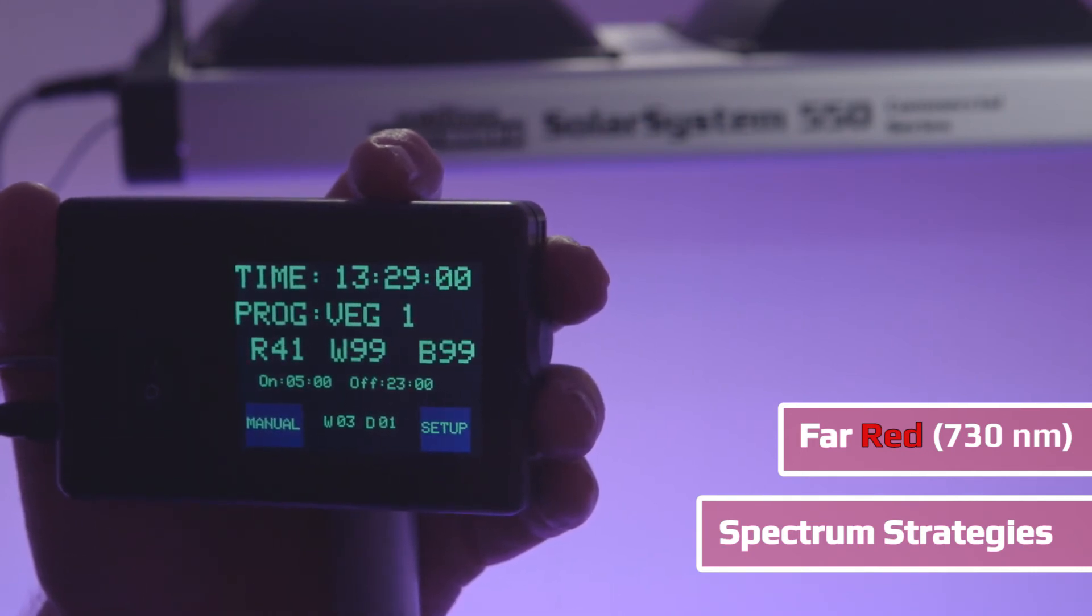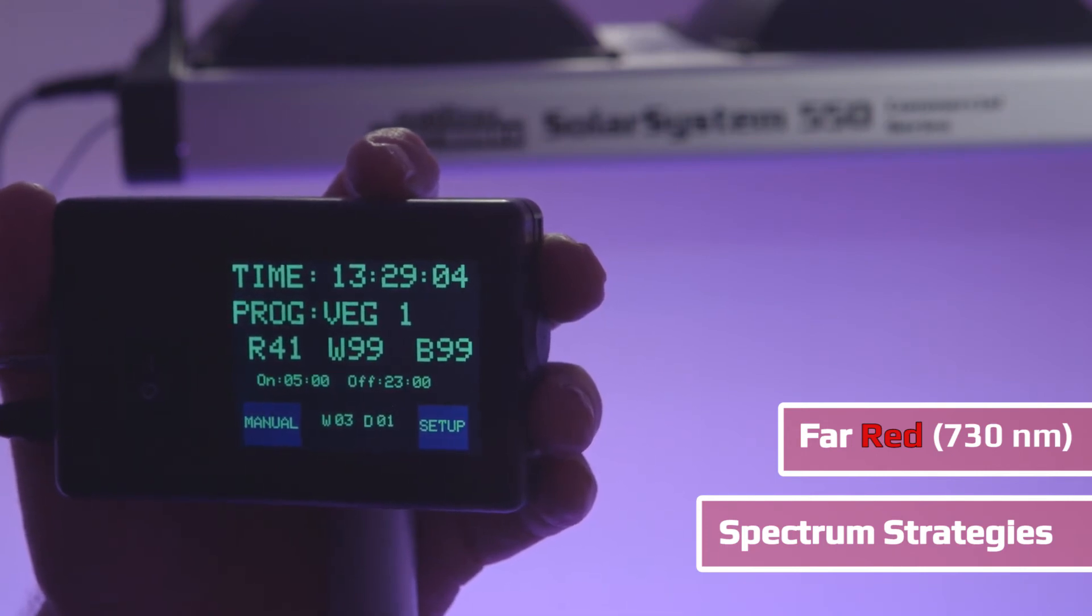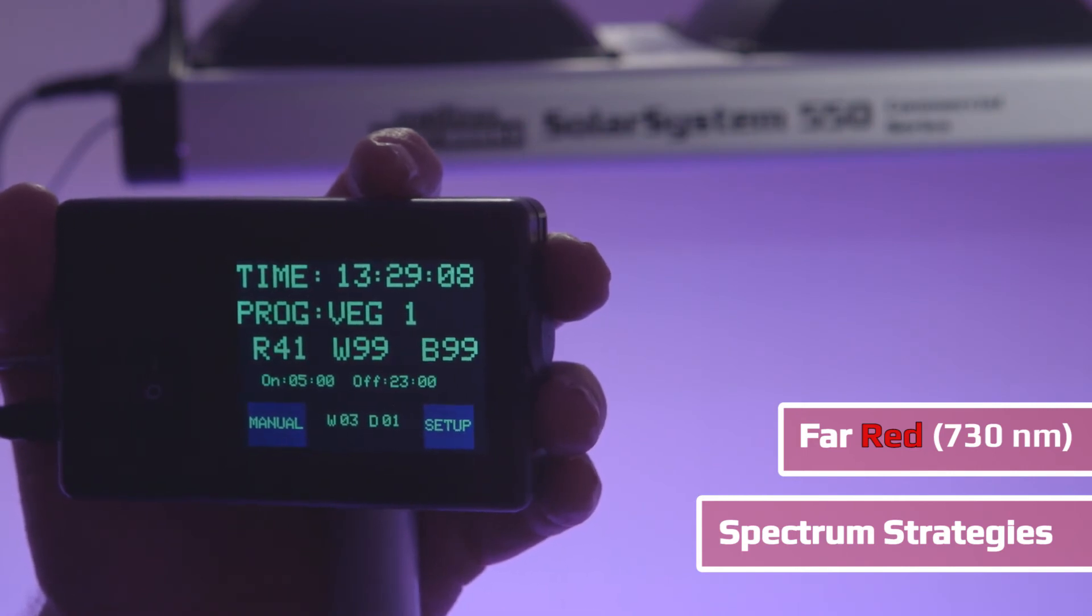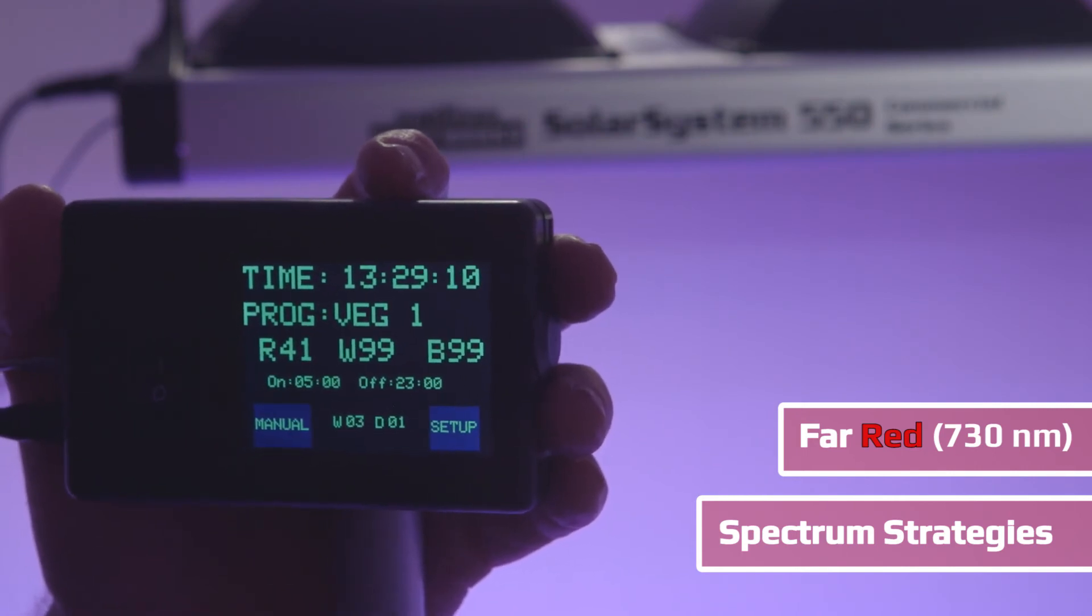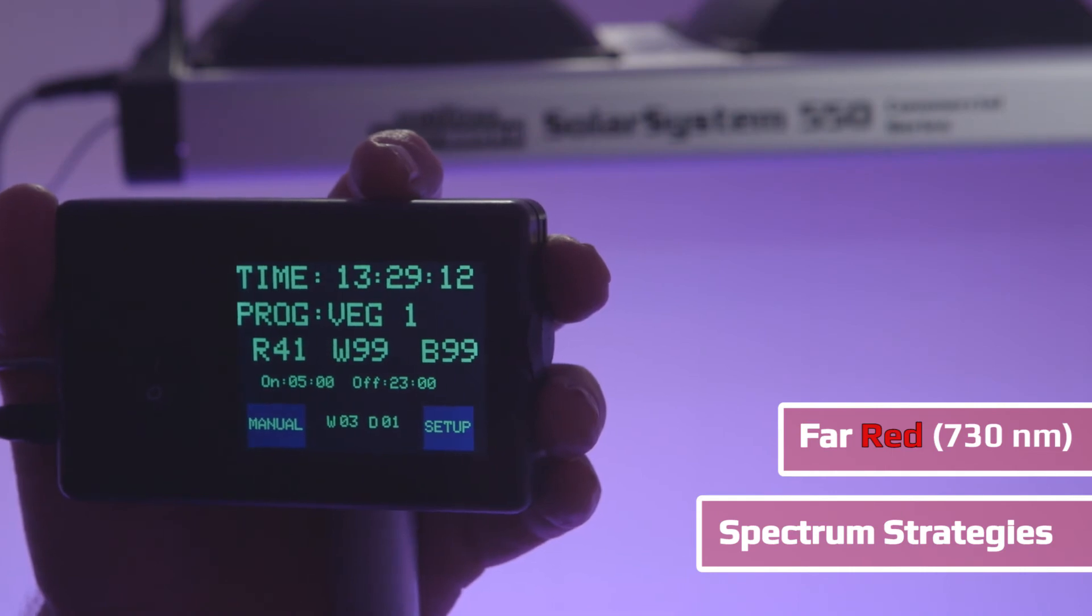This way it's possible to only have a 10-hour dark period rather than 12 without the plants reverting to veg. Therefore you could theoretically flower 14 on and 10 off. You can also shorten the total number of days you're in flower by the same logic.